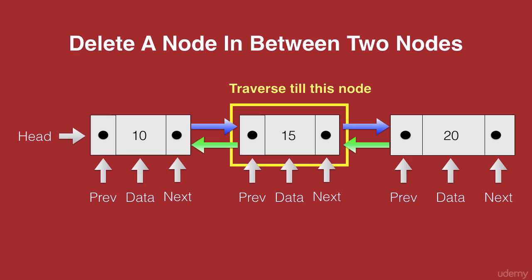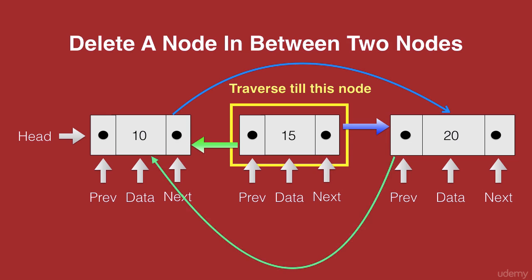If it's confusing, you will shortly see what's happening. For the previous node of this node, we remove the next pointer and make it point to the next node of this node. Similarly, for the next node of this node, we remove the previous pointer and make it point to the previous node of this node, and that completes the connection.